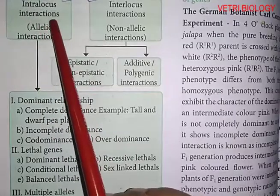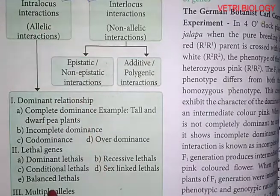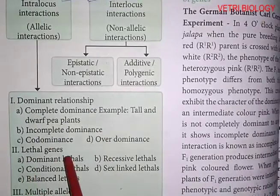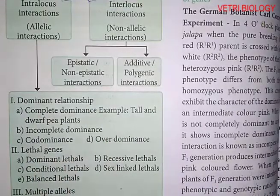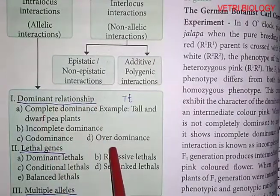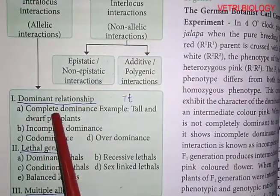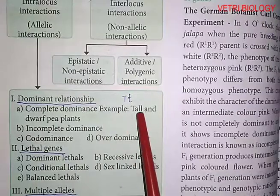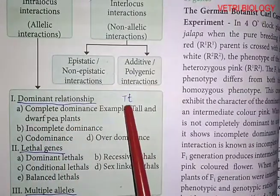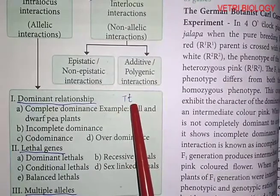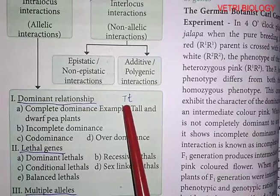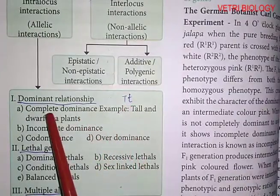Intralocus interactions have three divisions: dominant relationship, lethal genes, and multiple alleles. Dominant relationship occurs in four ways. First: complete dominance — example, tall and dwarf pea plants. In one locus, the dominant alleles T express the character, suppressing the recessive. This is called complete dominance.